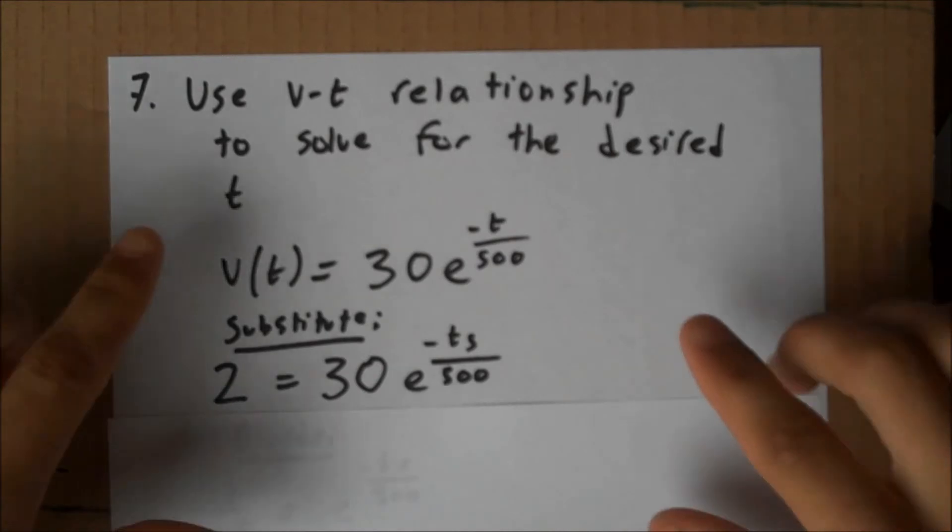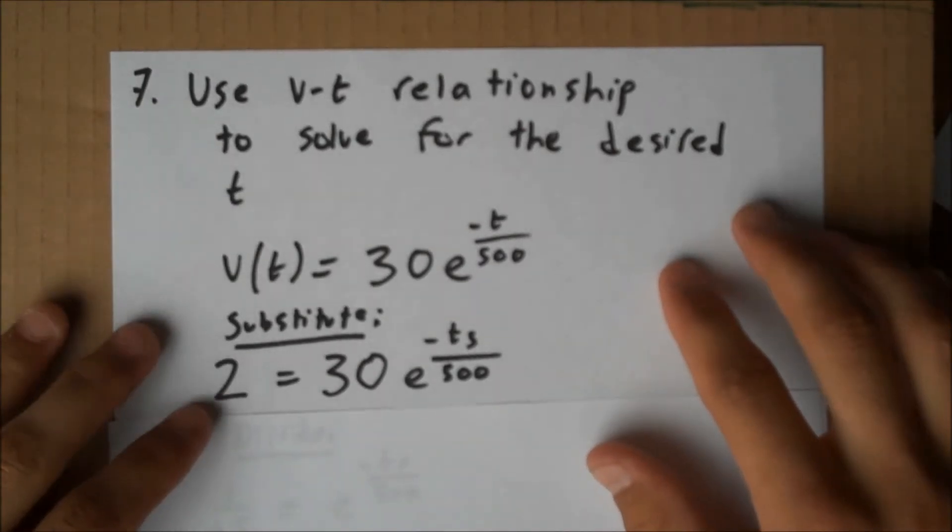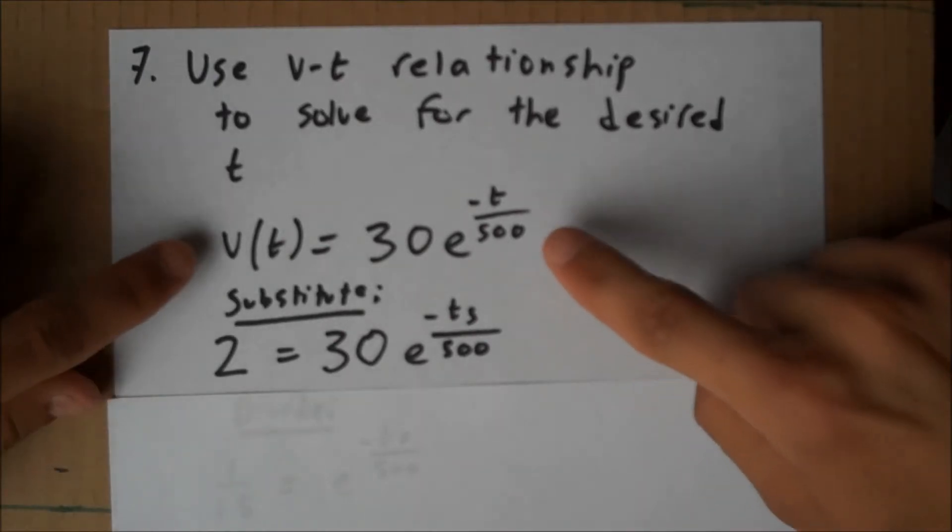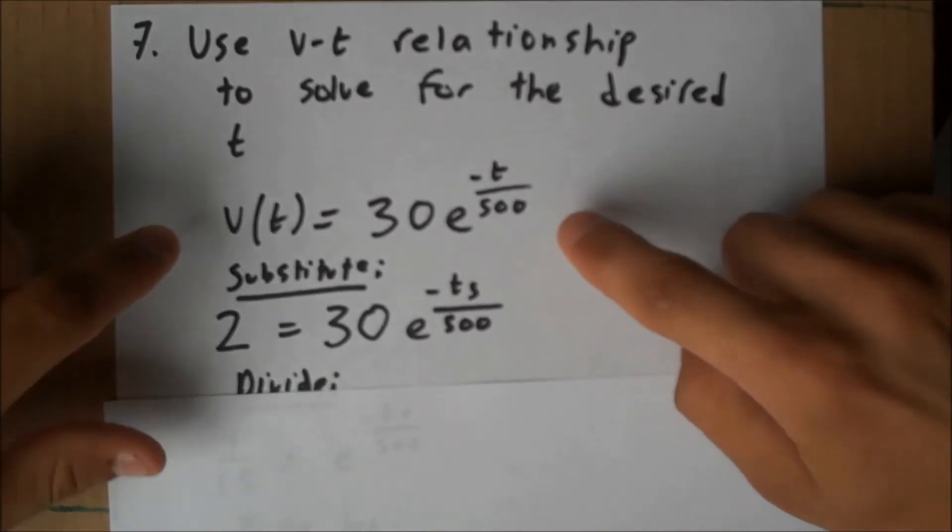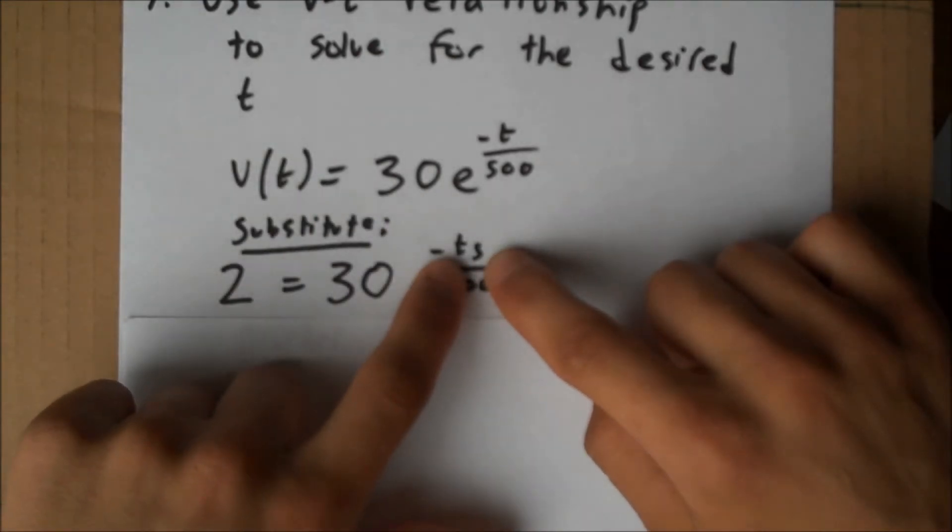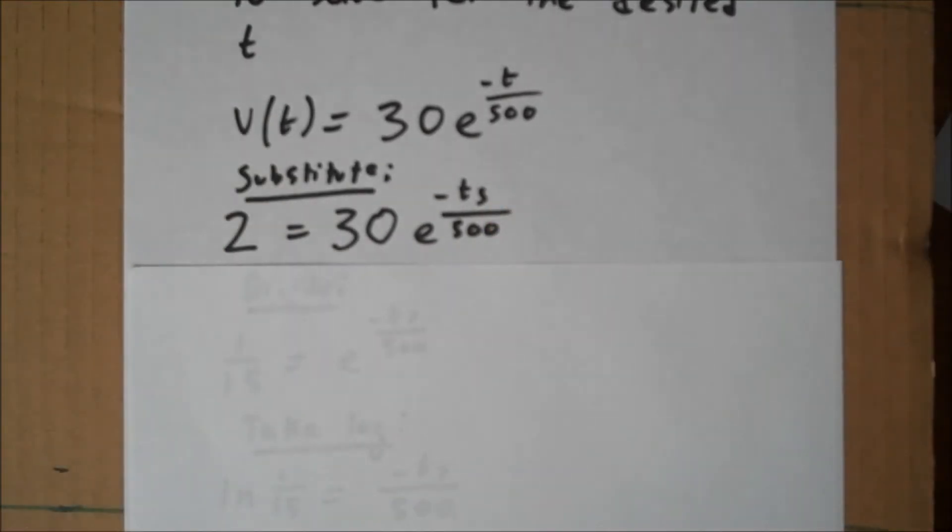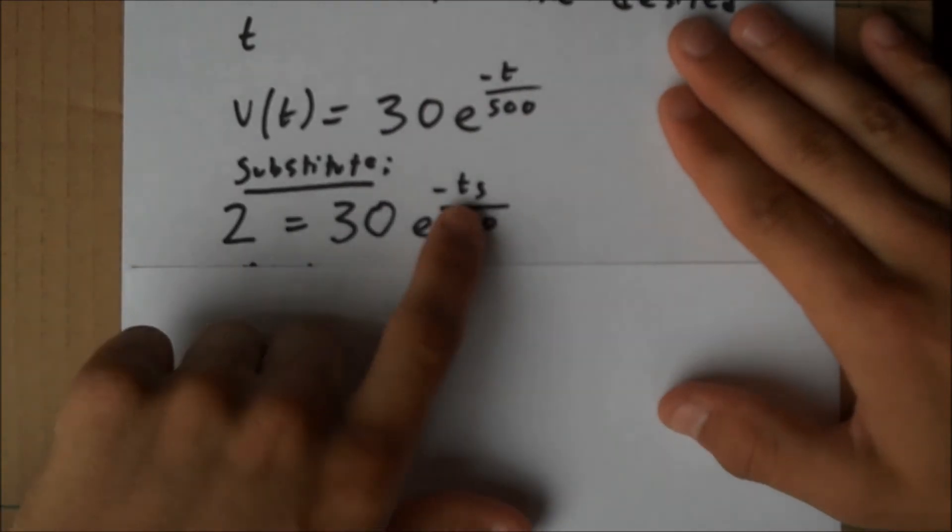And finally, we'll use the vt relationship that we found to solve for the desired t. What we want to know is, what is the t when the velocity is 2? Because when the velocity is 2, Cletus can then pull the emergency brake. So, in our relationship that we found, v of t equals 30, e to the negative t over 500, we can substitute in 2 for v. And then, we now have the stopping time. Solving for ts here will give us the time when the velocity is 2, essentially the time at which you can pull the emergency brake. So now we need to solve for ts.